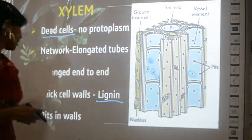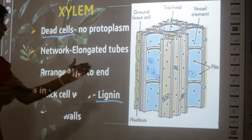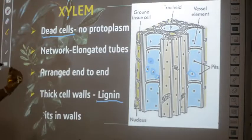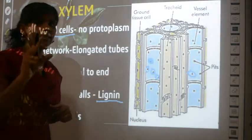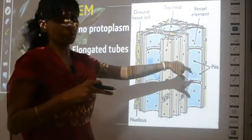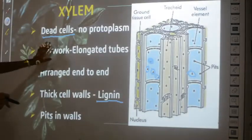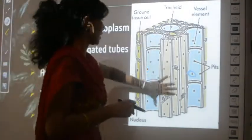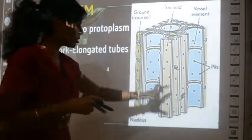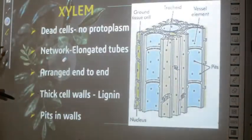To summarize xylem's structure: xylem is made up of dead cells, it is a network of elongated tubes arranged end to end, it has thick cell walls made of lignin (not cellulose), and it has many holes or pits in its structure. Next we will see the detailed structure of the yellow and blue color regions — the elements of xylem.